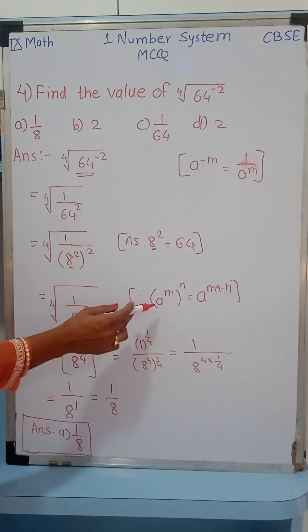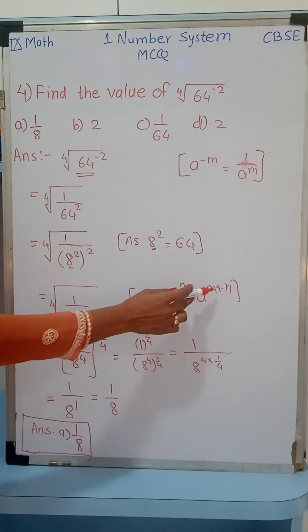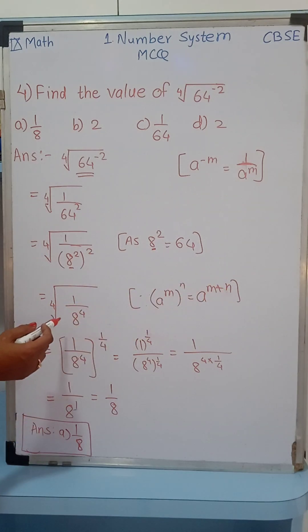Now again, power raised to power: a raised to m raised to n equals a raised to m times n. We are going to use this, so this will be 8 raised to 2 times 2, that is 4. So the question becomes fourth root of 1 over 8 raised to 4.